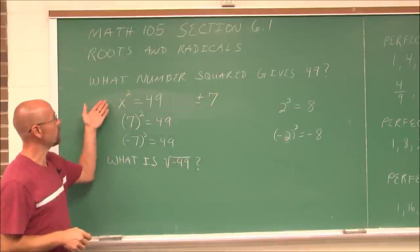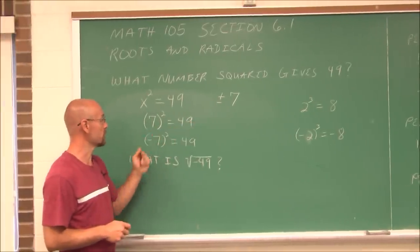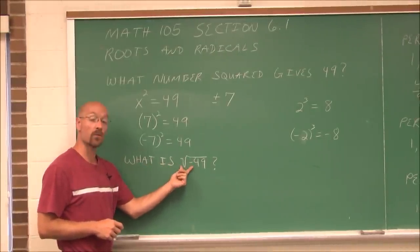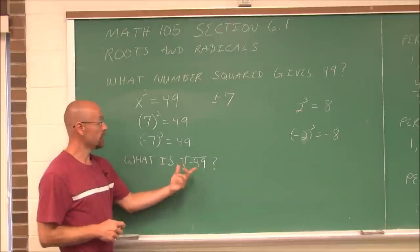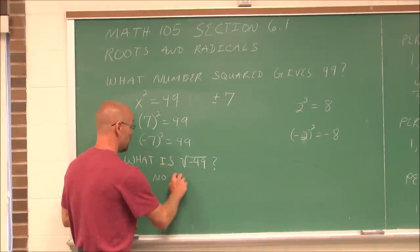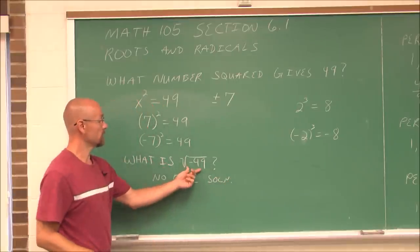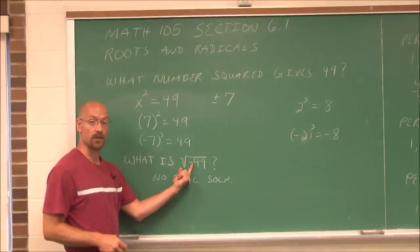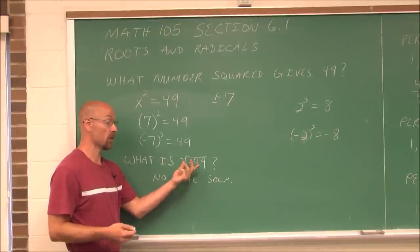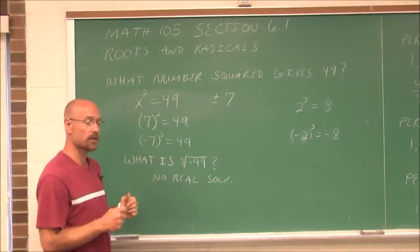When we introduce a radical — a square root — we have to remember plus or minus for this reason. But what if we asked: what is the square root of negative 49? In the real number system, there is no real solution, because there is no value times itself that gives a negative. A negative times a negative is a positive, so we can't get a negative value by squaring a number.